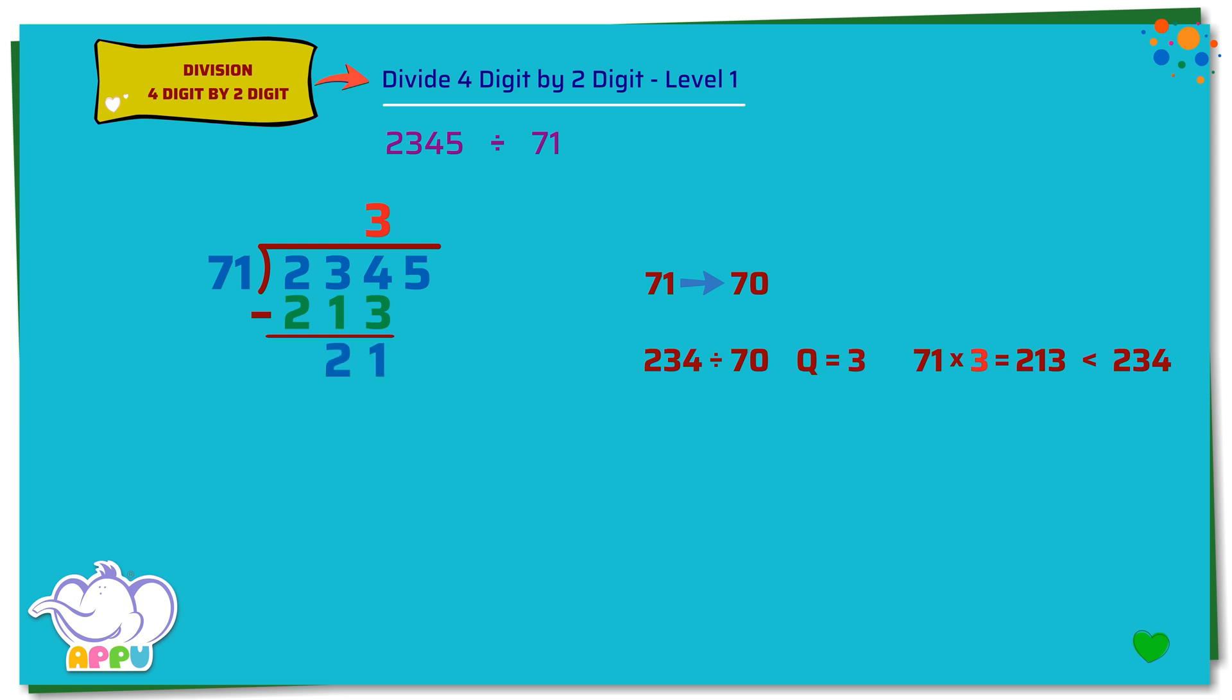Next, we bring down the number in the ones place, which is 5. The number now becomes 215.